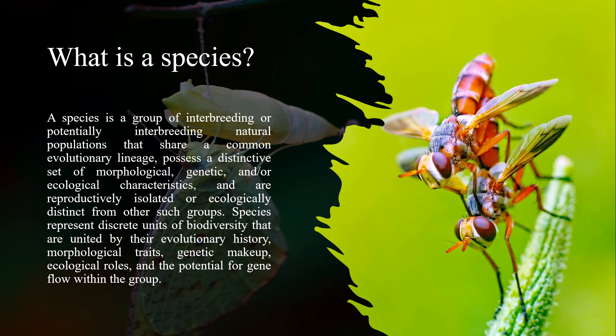Before we open up the typological or morphological species concept, let's first bring a definition. What is a species? A species is a group of interbreeding or potentially interbreeding natural populations that share a common evolutionary lineage, possess a distinctive set of morphological, genetic, and/or ecological characteristics, and are reproductively isolated or ecologically distinct from other such groups.